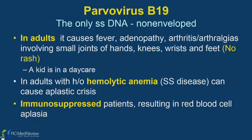Another patient who develops red cell aplasia on the exam is a patient with thymoma. So remember: thymoma causes red cell aplasia, and HIV patient infected with parvovirus B19 also causes red cell aplasia.